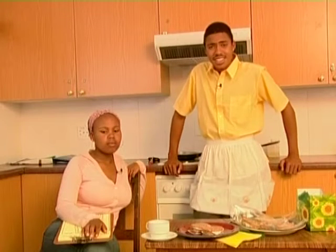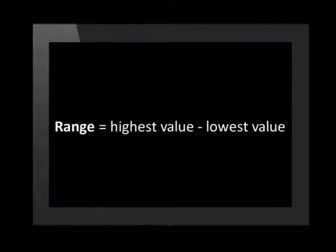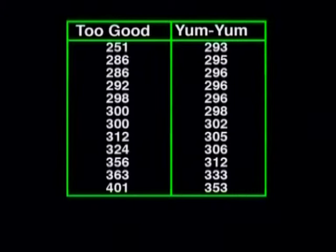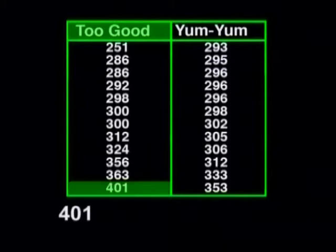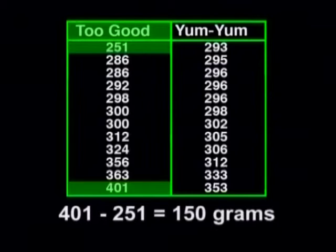What you've noticed is that the masses of the Two-Good patties are more spread out. This means they have a larger range. The range is a simple measure of spread which shows how much the values of the data vary. We calculate the range by subtracting the lowest value of data from the highest value of data. For example, the range of the masses of the Two-Good patties is 401 minus 251, which gives us 150 grams.